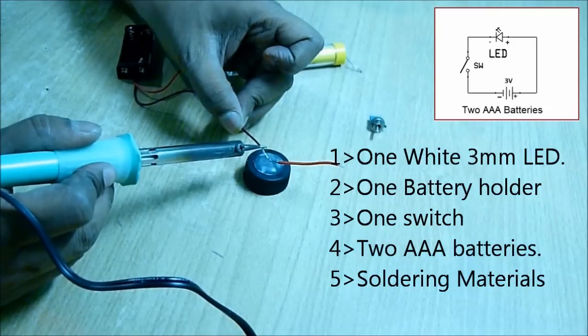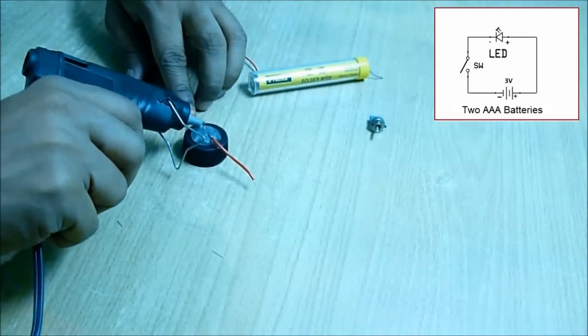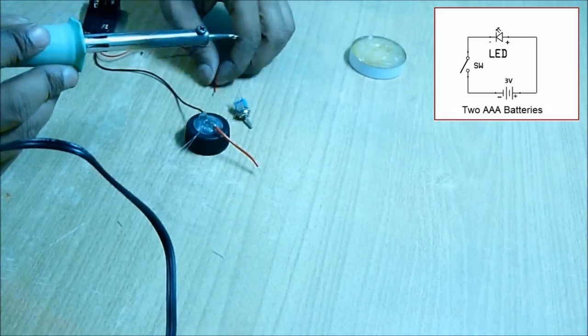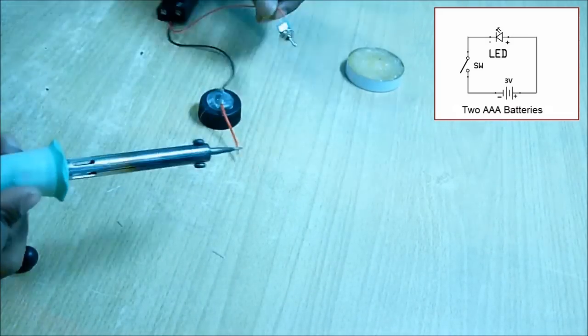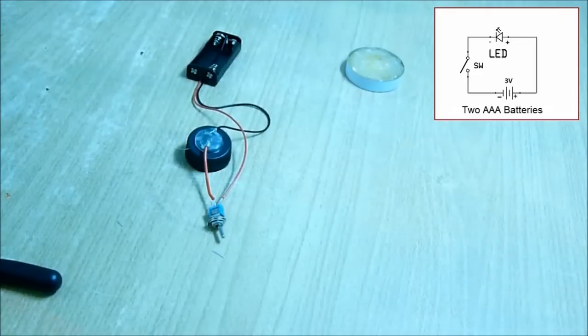Now we are going to solder a switch and a battery holder. The circuit you can see on the top inset. It's a series connection between a switch, LED, and a holder.